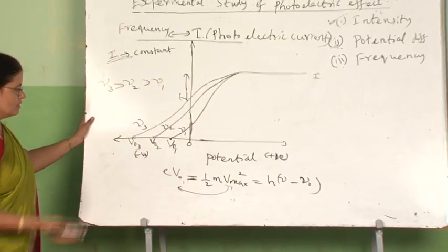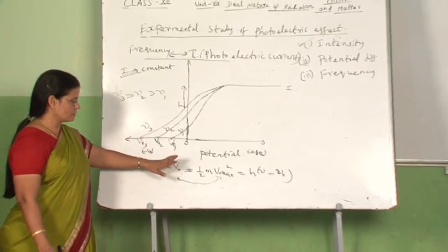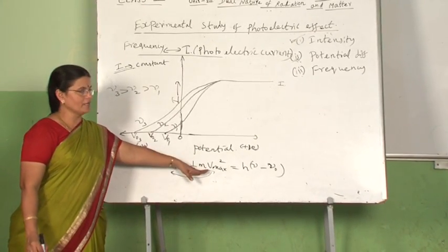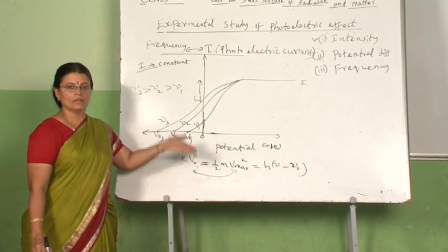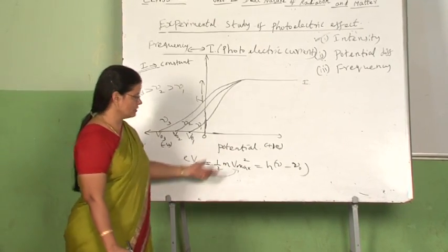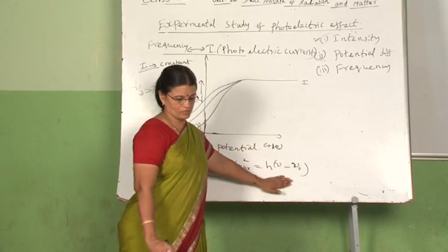From this we can remember that stopping potential or the kinetic energy of emitted electrons—these two factors are independent of intensity of incident radiation but depend only on the frequency.